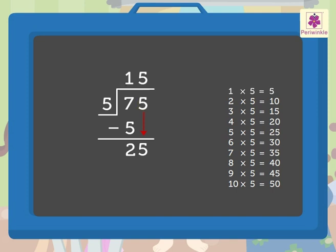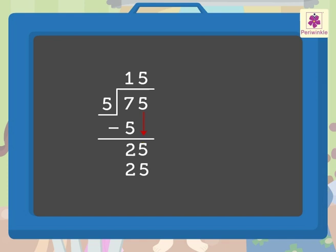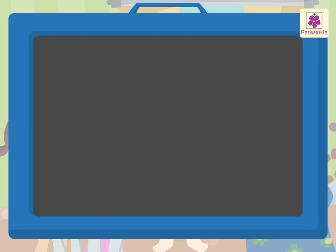Since we know 5 multiplied by 5 equals 25, write the number 25 under 25. Finally, subtract 25 from 25, which equals 0, which is the remainder. Write 0 in the ones column.